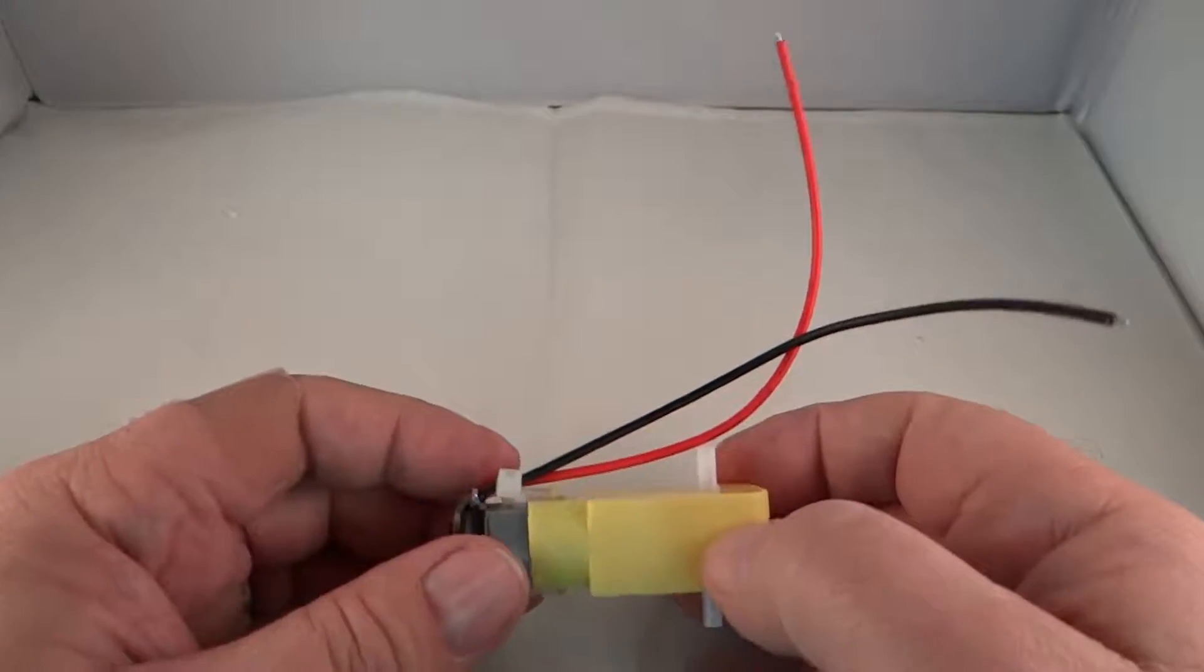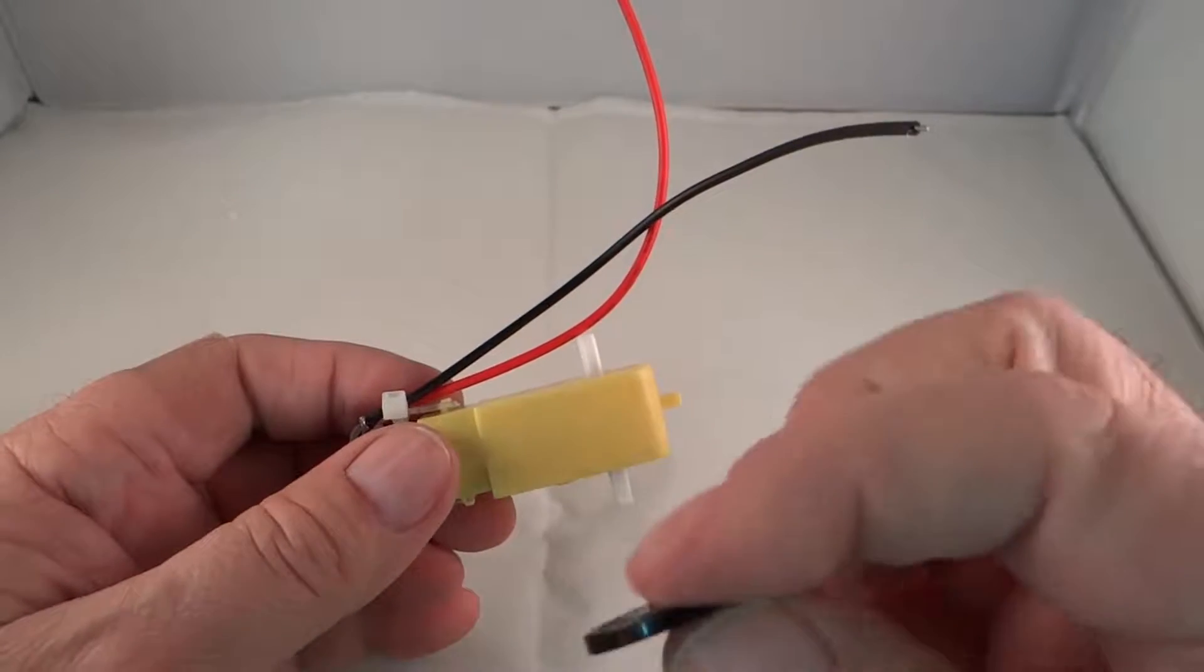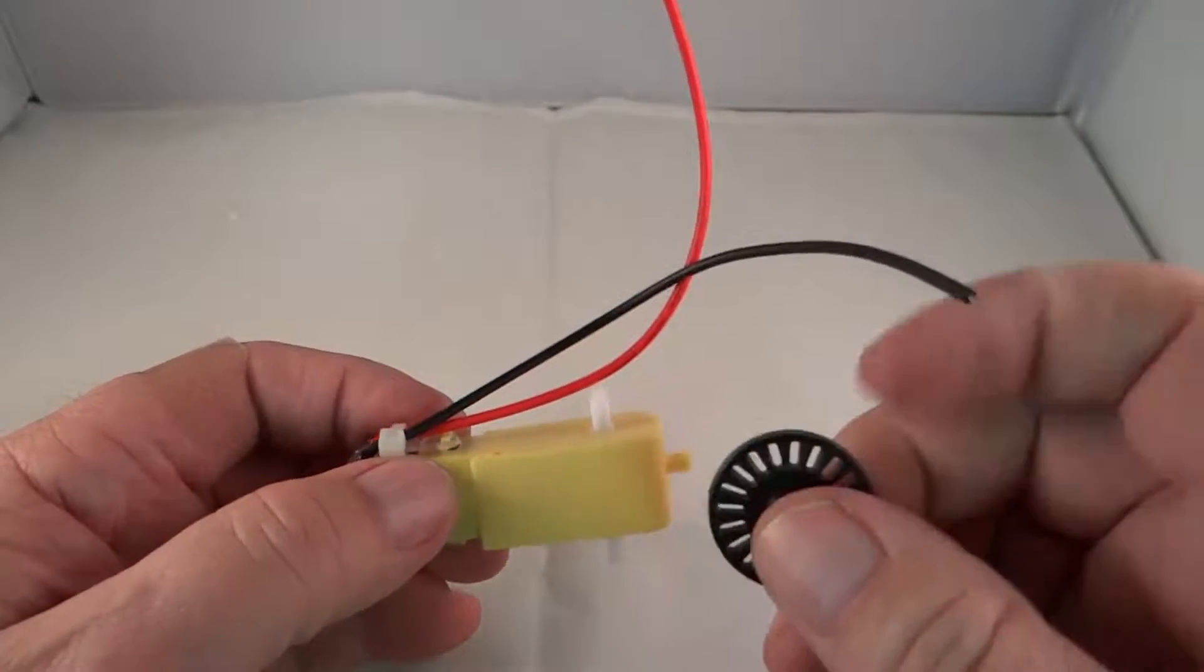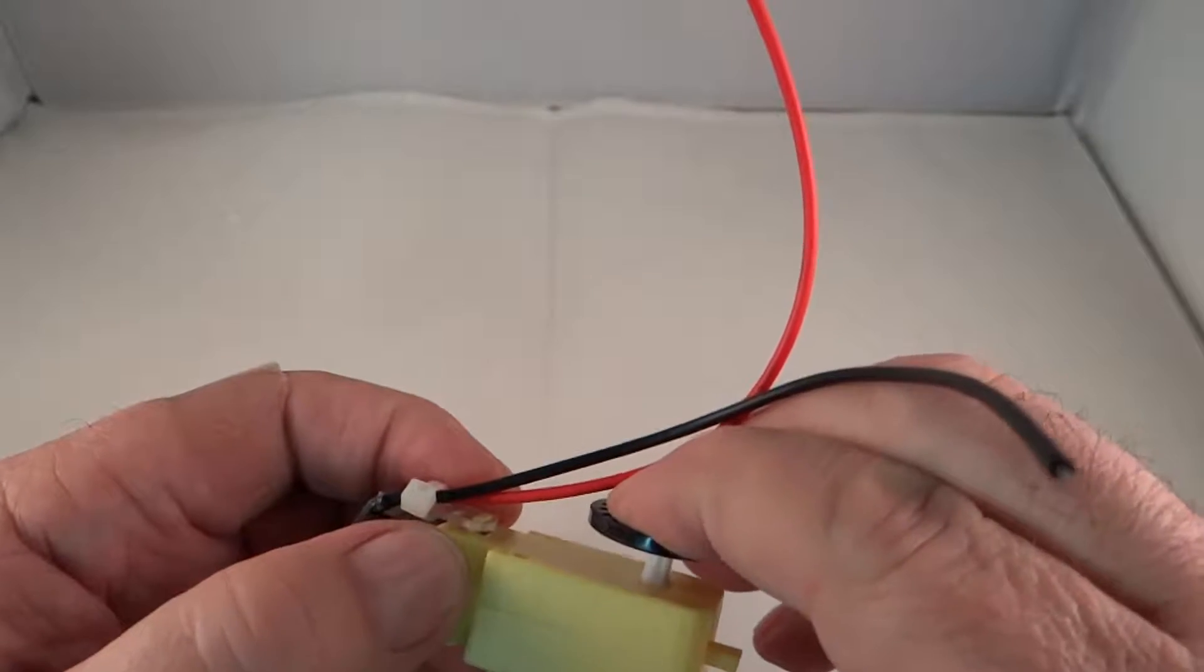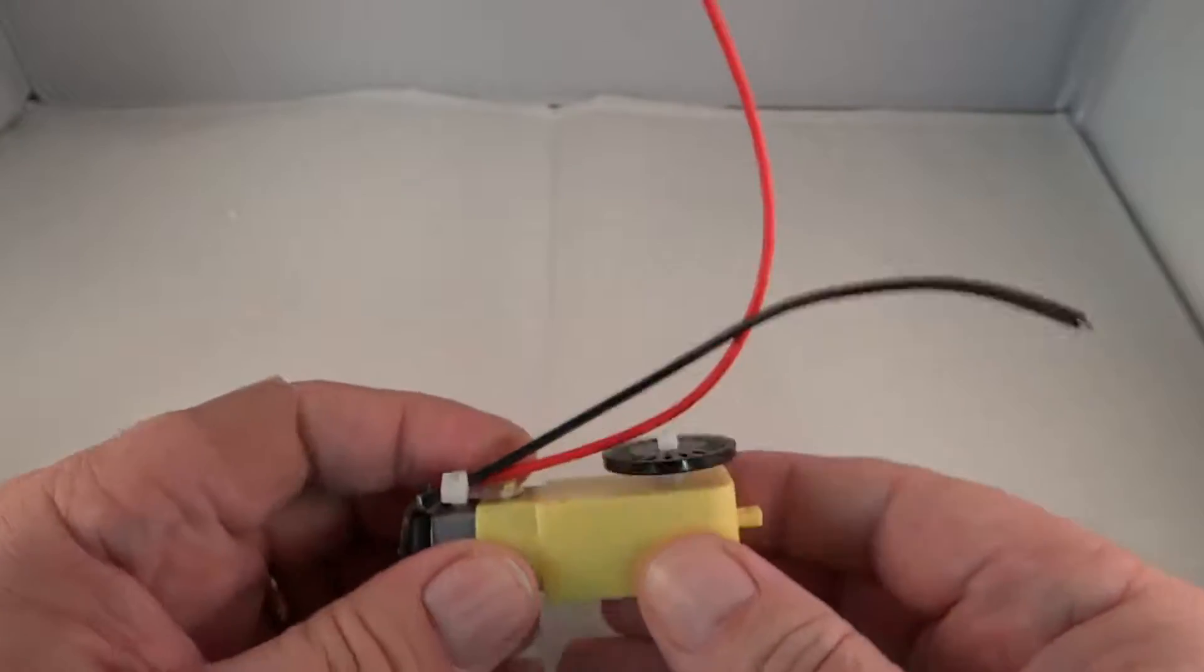Okay, we're getting ready to attach the motors to the chassis. I suggest that you put wheel encoders on first. They go on the wire side of the motor.